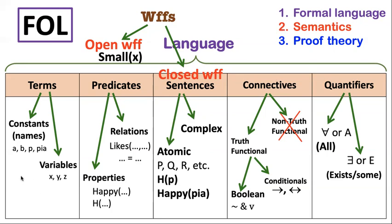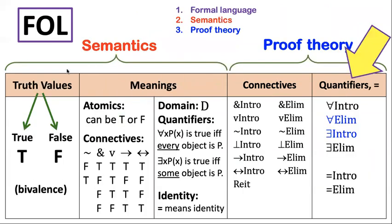You've also learned the semantics. So when are these sentences true or false? Like for example, identity always must mean identity. And here are the semantics for the quantifiers. For all X, P(X) is true just in case every object has property P and you need a domain of quantification. The formal language and the semantics we've been talking about quite a bit.